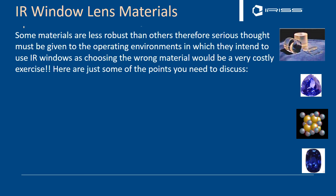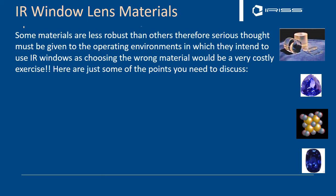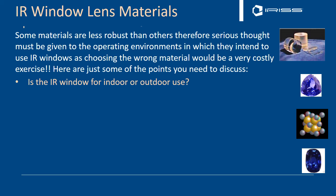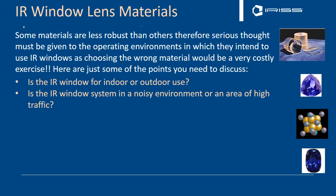When looking at operational considerations for your infrared window, this is very important. Some materials are less robust than others, so give serious consideration to the operating environment in which you're going to place your window — because if you get this wrong it's going to be a very costly exercise. You need to consider: is the window for indoor or outdoor use? Is there an IP rating requirement — for instance IP 65 or IP 67 for outdoor environments? What are the materials of the window body — aluminum, stainless steel, plastics? And is the window system going to be in a noisy environment or an area of high traffic where it can be hit?